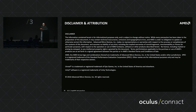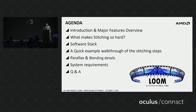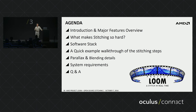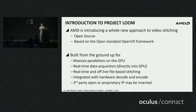Now Mike Schmidt takes over to talk about Project Loom. It's a whole new way of doing stitching targeting real-time performance. It will be open sourced within the next couple of weeks. It's based on OpenVX — a Khronos standard about two years old for computer vision — and this pipeline accelerates both processing and development. It was built from the ground up with massive parallelism as the basic idea, with real-time data acquisition built in.